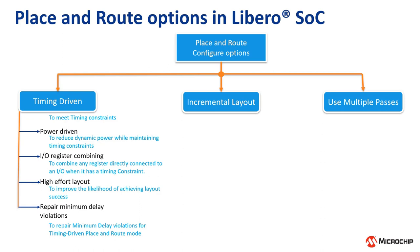The next configuration option under the Place and Route tool is Incremental Layout. Incremental Layout uses the previous placement data as the initial placement for the next run. By executing layout in Incremental Mode, the location of previously placed cells and the routing of previously routed nets is preserved.